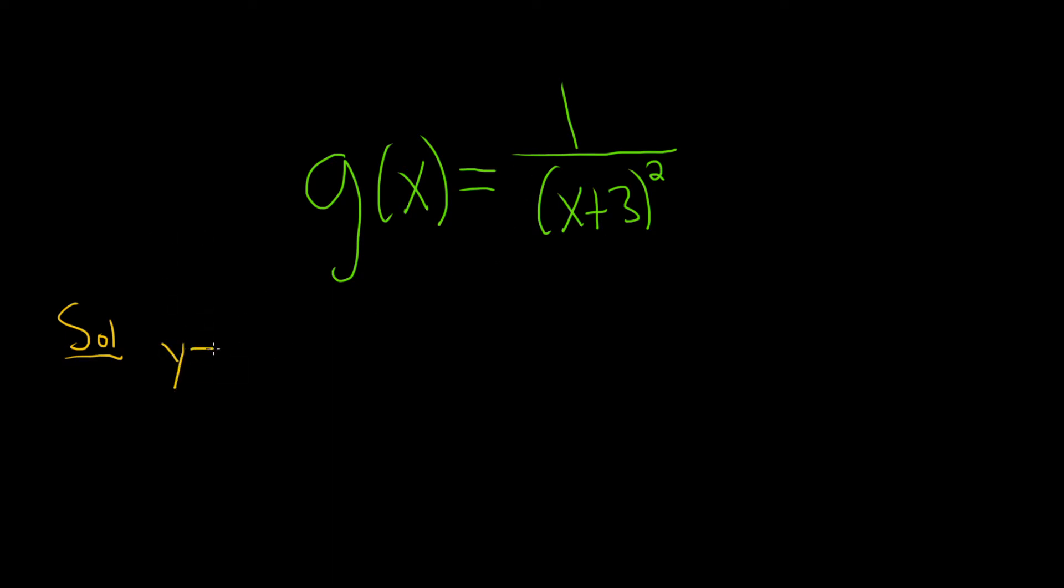So if you look at the graph of 1 over x squared, it's pretty easy to memorize. It looks like this. It's got two asymptotes. It has a vertical asymptote at 0 right along the axis, and it has a horizontal asymptote at 0, again, right along the axis, where this is the x-axis and this is the y-axis.